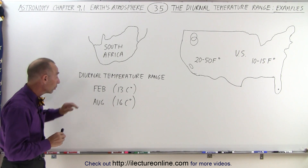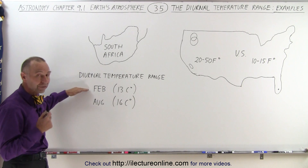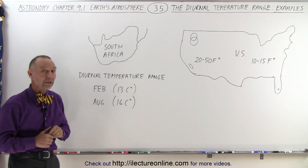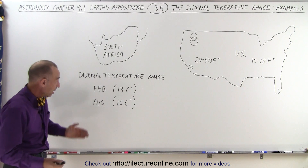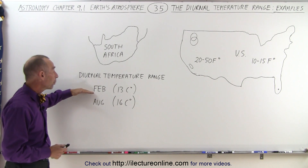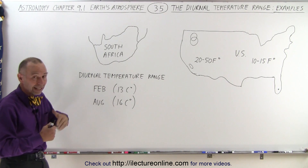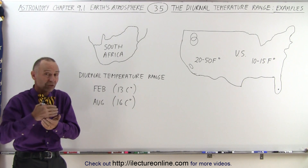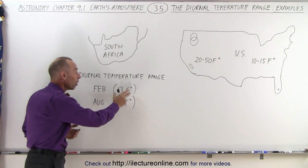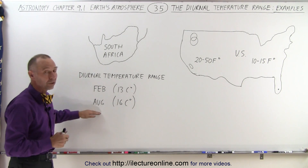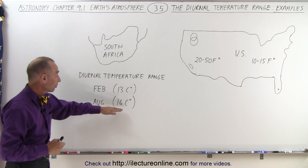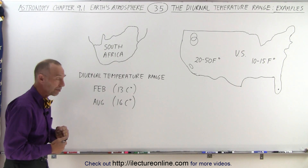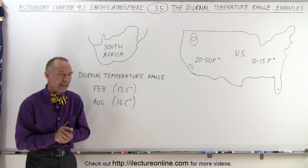The 13 centigrade degrees typically is around February and the 16 centigrade degrees is typically around August. In South Africa, August is their winter time and February is their summer time. In summer, where temperatures are higher and therefore the amount of water vapor in the atmosphere is greater, we see a smaller temperature range. In August when temperatures cool down, the temperature range becomes larger — there's less water vapor in the atmosphere, and as an effect we have a larger difference between daytime and nighttime temperatures.